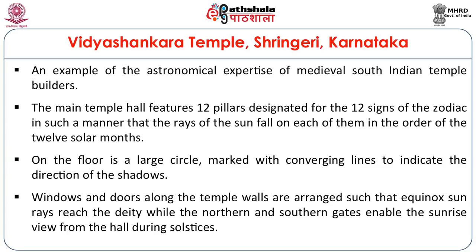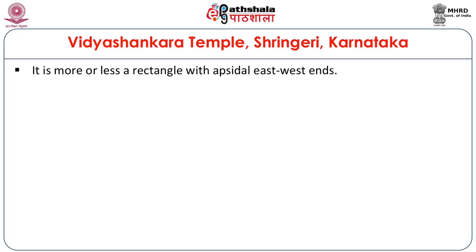The rays fall first on January, then February, then March — according to the Hindu calendar. On the floor is a large circle marked with converging lines to indicate the directions of shadows. The windows and doors along the temple walls are arranged such that the equinox sun rays — the equinox that comes twice a year — reach the deity. The northern and southern gates enable the sunrise view from the hall during the solstices. The apsidal shape of the shrine indicates it is a very typical architectural feature of the Vesara style.